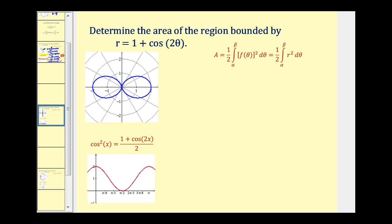In this example, we want to determine the area of the region bounded by r equals one plus cosine two theta. Here's the graph of our polar curve. It's also helpful to graph this on the rectangular coordinate plane where the y-axis is r and the x-axis is theta, which is very helpful to determine the limits of integration.